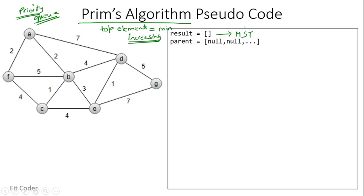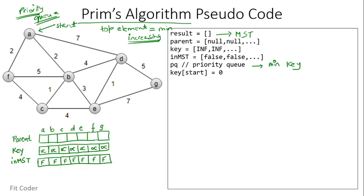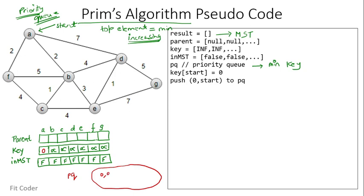We require a result array to store the minimum spanning tree. We keep a parent array to store the parent of all vertices, initialized to null. Then we have a key array — infinity here denotes a very large number, so initially the key of all vertices is infinity. There is also a boolean vector inMST which tracks which vertices are already included in the MST. Then we have the priority queue. Let's say A is our start vertex — we set key of start to 0, and push (0, start) to the priority queue.